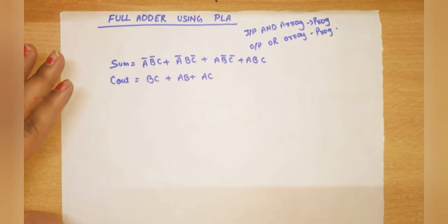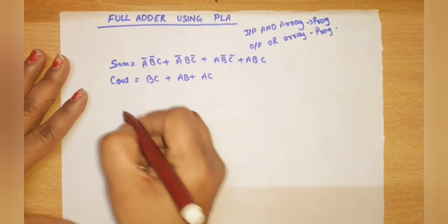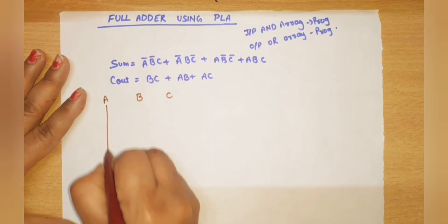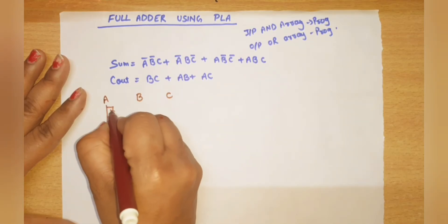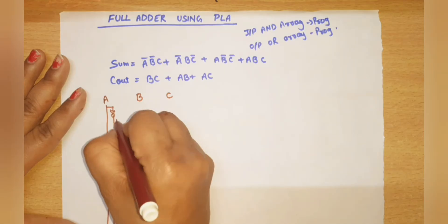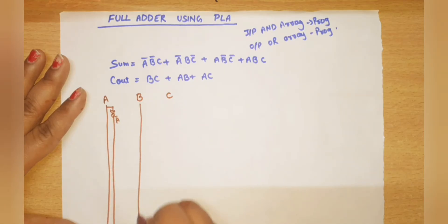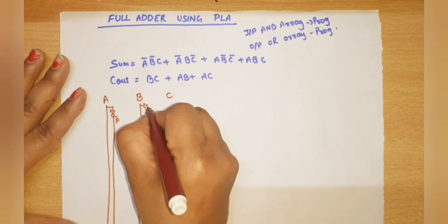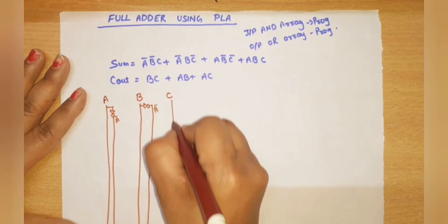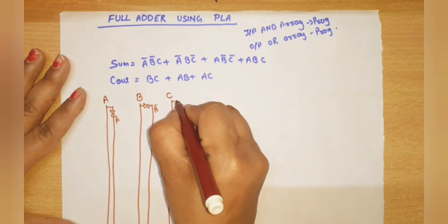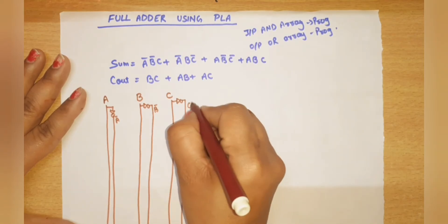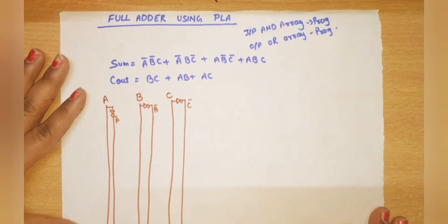Both equations for Sum and Carry Out are done. Now let's draw the logic diagram. First, our variables are A, B, C. Pass A through a NOT gate to get A-bar. Pass B through a NOT gate to get B-bar. Pass C through a NOT gate to get C-bar.